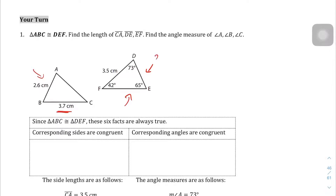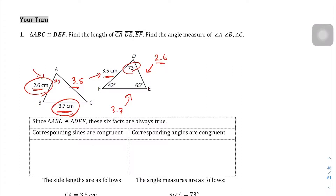We also have some missing information. The shortest side is 2.6 on this triangle, and the longest side is 3.7 — I get that from the other triangle. The side missing from the first triangle is 3.5, which I get from here. Now let's fill in the angles: the angle between 2.6 and 3.5 is 73 degrees. The angle between 3.7 and 2.6 is 65 degrees. And the only one left, angle C, is 42 degrees.